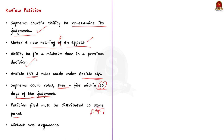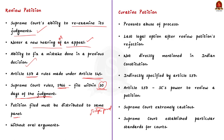What if a review petition is dismissed by the Supreme Court? In that case, it may consider a curative petition filed by the petitioner, to prevent abuse of process. A curative petition will be the last legal option open to an individual after the rejection of a review petition — practically the last legal appeal device present in our country.